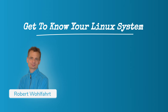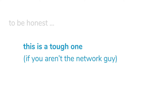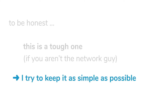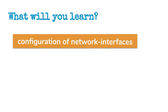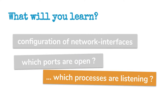Hello, this is Robert Wolfert, and in this episode of 'Get to Know Your System' we want to examine the network capabilities of the system you are currently on. To be honest, this lesson is a tough one if you aren't the person who configures networks every day, so I try to keep it as simple as possible. First, we want to see if and how many network interfaces the system has and how they are configured with IP settings, and then we want to check if there are some network ports open on the system and which services or processes are listening on these ports.